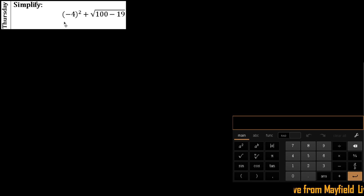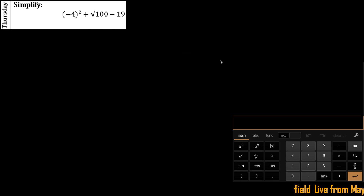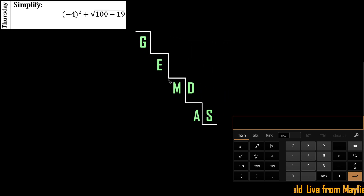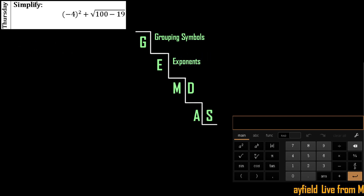There are operations and numerical values in there, so we're going to get a nice little pyramid going. This is going to be our order of operations. If you need to remember those, that's going to be GEMDAS. As a quick recap: G stands for grouping symbols, E stands for exponents, we have multiplication and division.